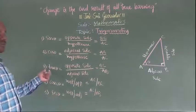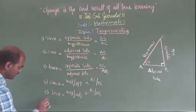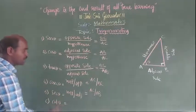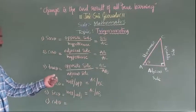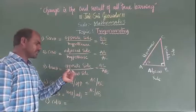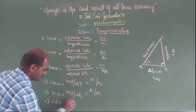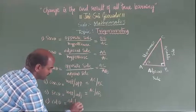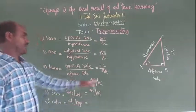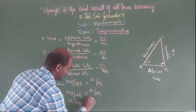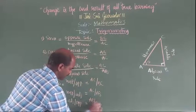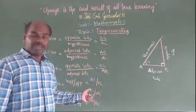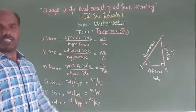The sixth one - cot theta is the reciprocal of tangent. Cot theta equals adjacent by opposite, which equals AB by BC. So these are the basic six ratios of trigonometry.